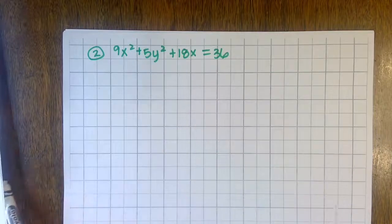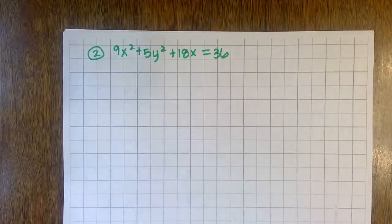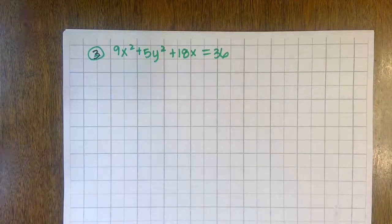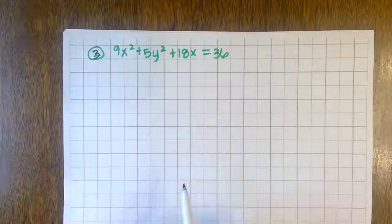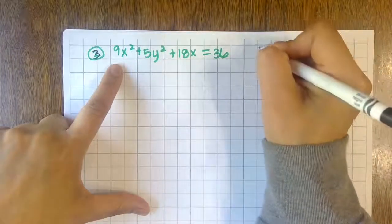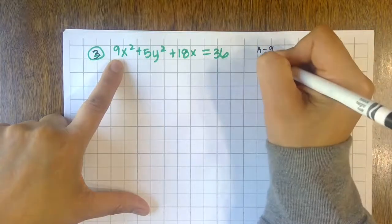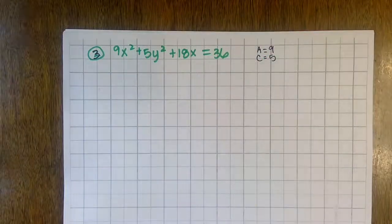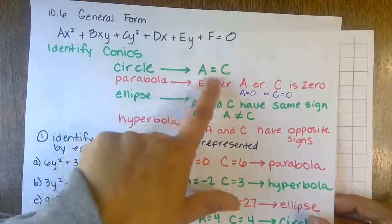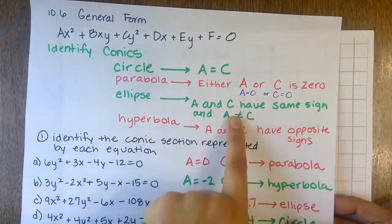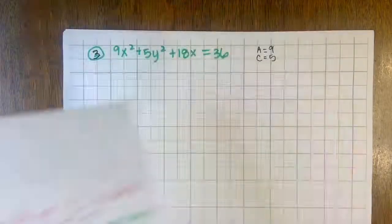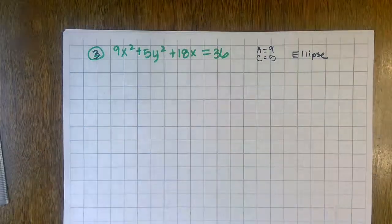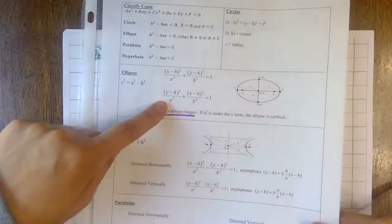Next problem: identify the conic section, write in standard form, and graph. A value is nine, C value is five. Going back to notes: they're not equal, neither is zero, and they do have the same sign — so this is an ellipse. The standard form for an ellipse will equal one, so we complete the square.